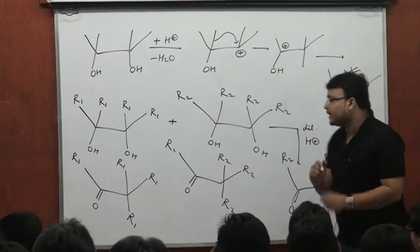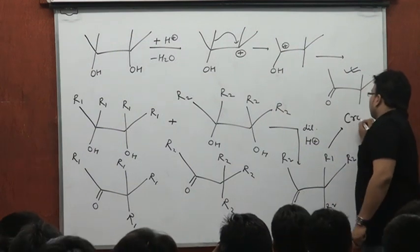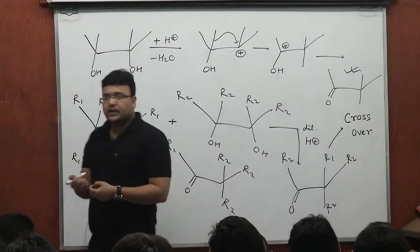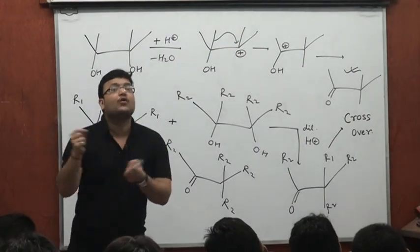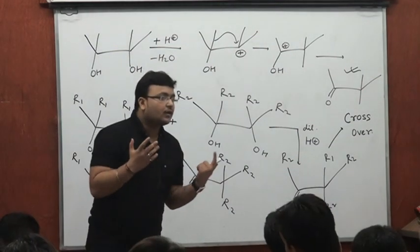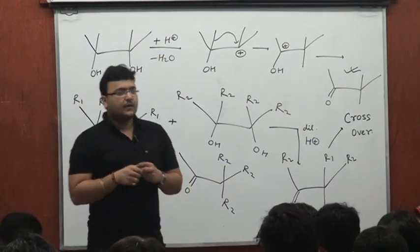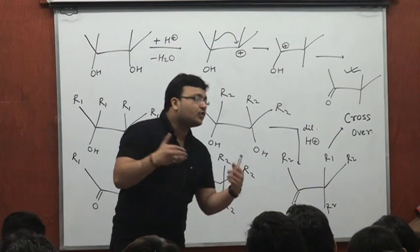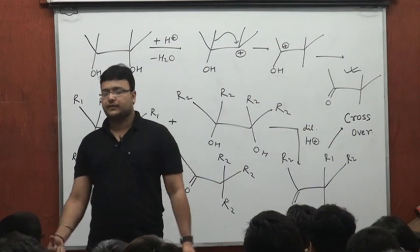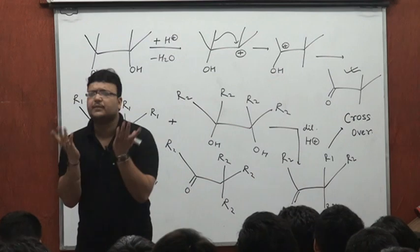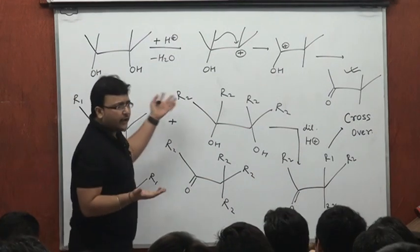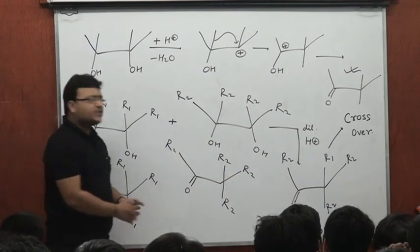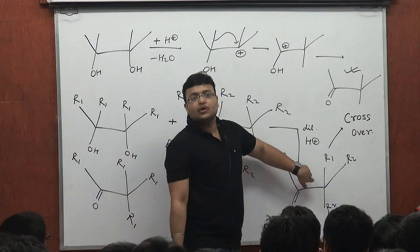These products are called crossover products. In different reactions, crossover products refer to those products which come out of an interaction of two different molecules of similar type. Both are diols, both are capable of giving this reaction, so working with a mixture of these would give the expected crossover product.